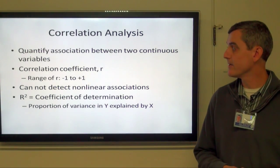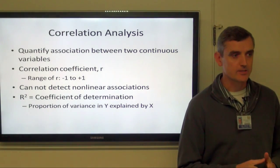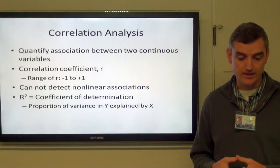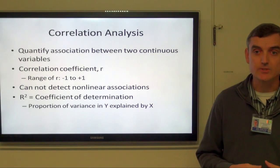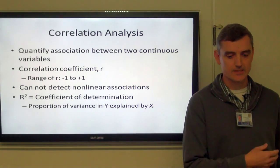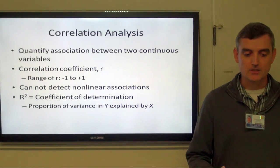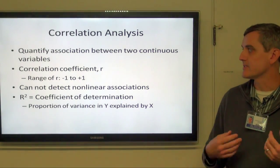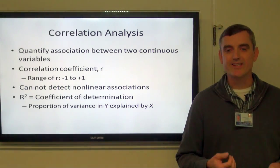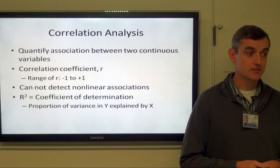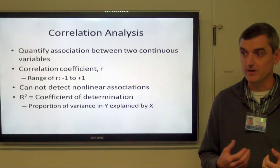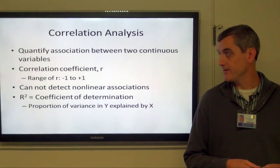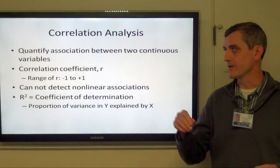Correlation analysis is what we use when we have a continuous independent variable against a continuous dependent variable — quantifying the association between two continuous variables. What we get out of a correlation analysis is called the correlation coefficient, sometimes called the Pearson correlation coefficient, also known as little r.